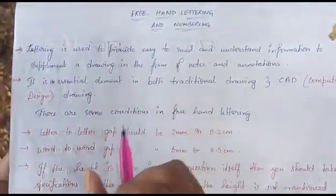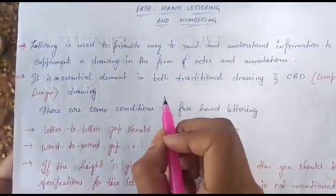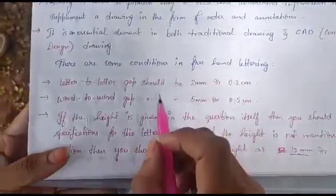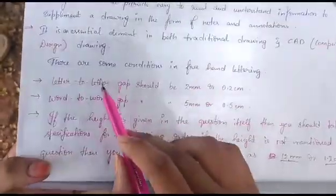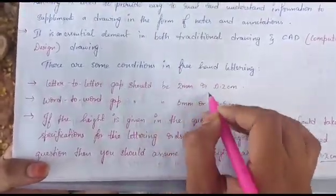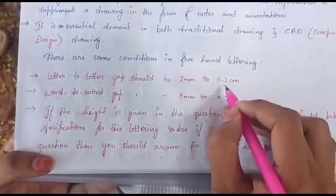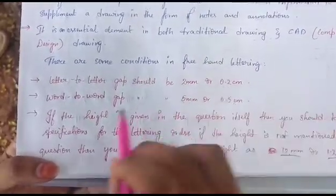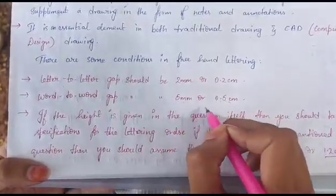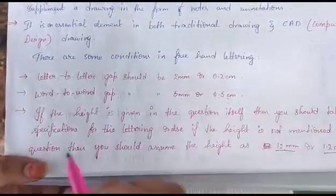We are going to use the lettering concept. There are some main basic conditions. First, letter to letter — every gap is 2 mm, or 0.2 cm. And word to word — every gap is 5 mm, or 0.5 cm.